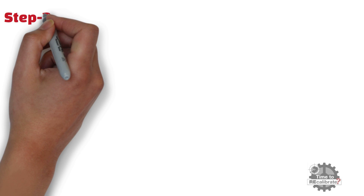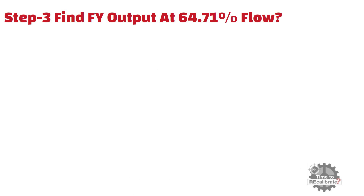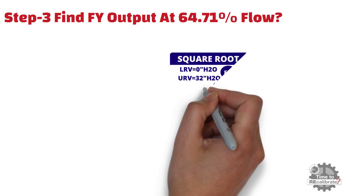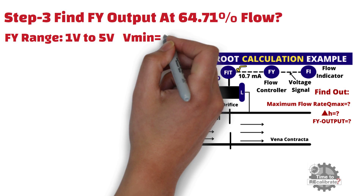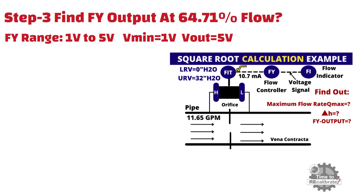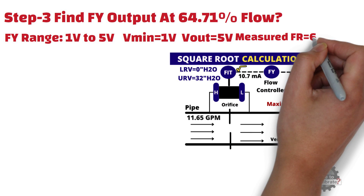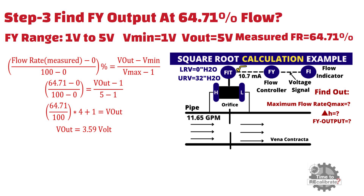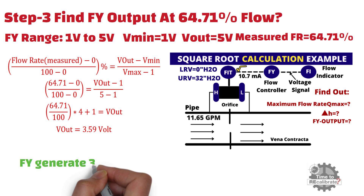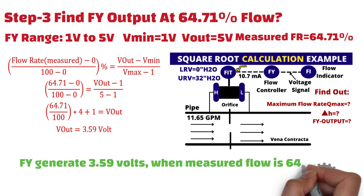Step number 3: Find the flow controller output when maximum flow rate is 64.71%. In this example, the flow controller range is 1 to 5 volts, meaning minimum range is 1 volt and maximum range is 5 volts, and maximum flow rate is 64.71%. Put all these values into the standard equation and do the simple math. You will get 3.59 volts — in other words, the flow controller will generate 3.59 volts when maximum flow rate is 64.71%.